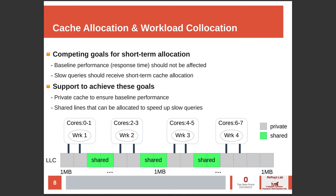We have two goals for cache allocation. First, we want to ensure the baseline performance of a query is unaffected by the allocation policies. And second, SLO queries should receive short-term cache allocation to speed up their executions. We considered a system that reserves two cores and two megabytes of private cache for each co-located workload. When short-term cache allocation is invoked, a workload receives two megabytes of additional cache shared with the neighboring workload, as seen in the diagram with cache lines highlighted in green.